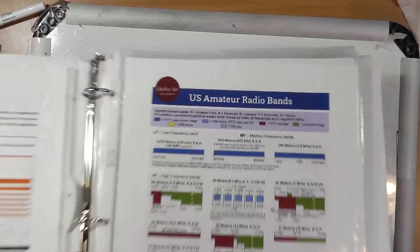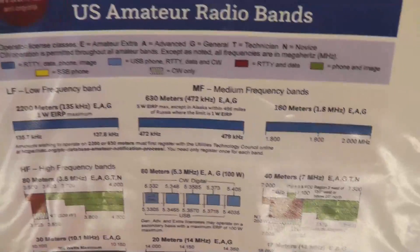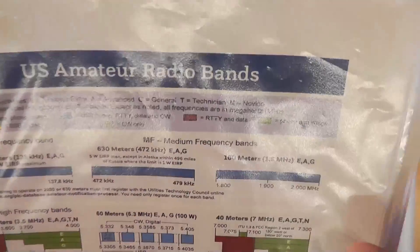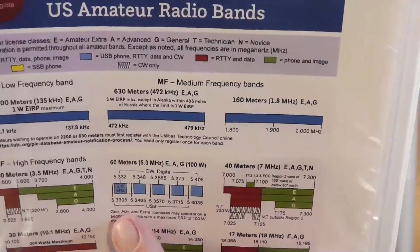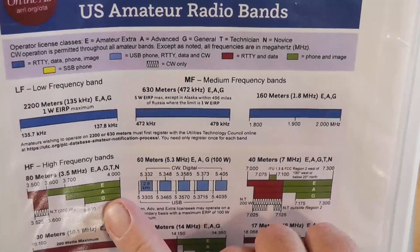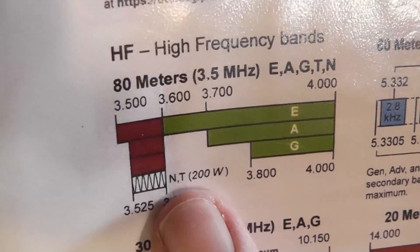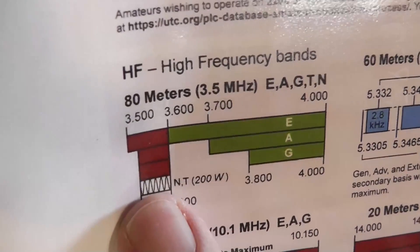Let's take a look at the U.S. amateur bands chart. This shows the different privileges for the different license classes: Extra, Advanced, General, Novice, and Tech. Now on 80 meters, see that squiggly line? That means CW only.